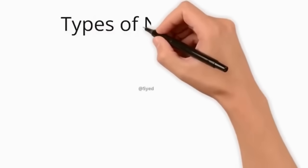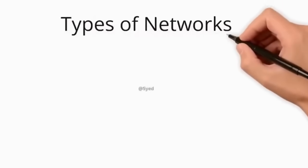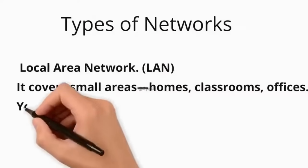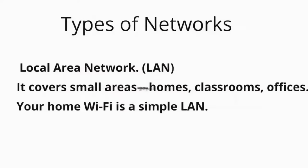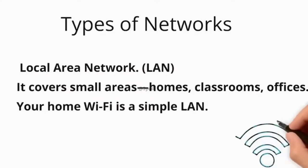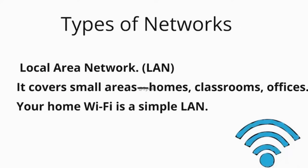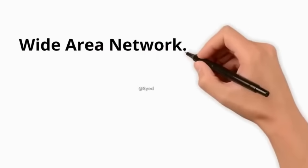Types of networks. Number one: LAN, the local area network. It covers small areas — homes, classrooms, offices. Your home Wi-Fi is a simple local area network.